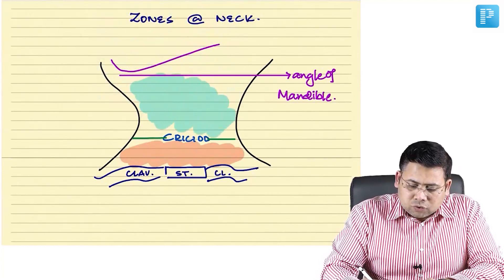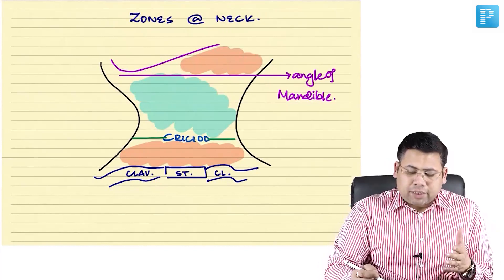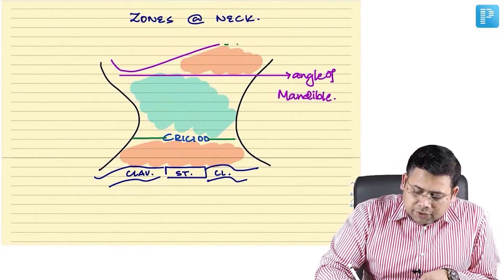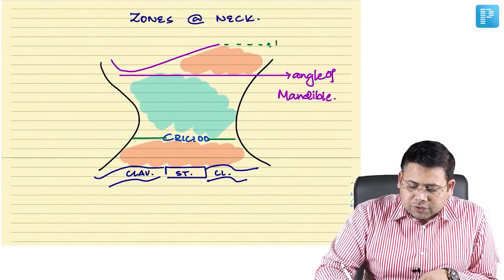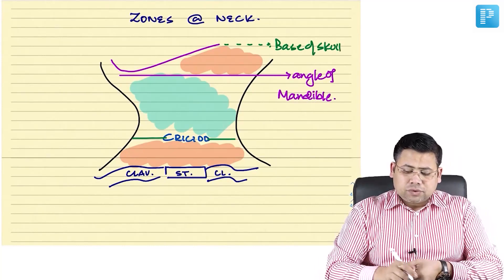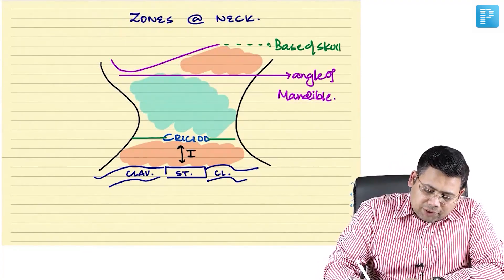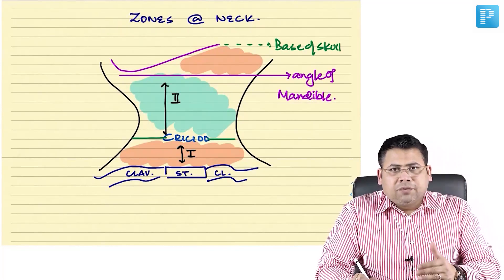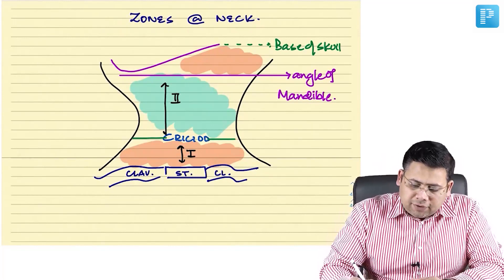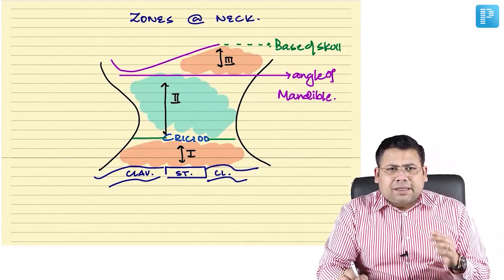Above the angle of mandible, up to the base of skull, is zone 3. So to summarize: zone 1 from sternum to cricoid, zone 2 from cricoid to angle of mandible, and zone 3 above the angle of mandible up to the base of skull.